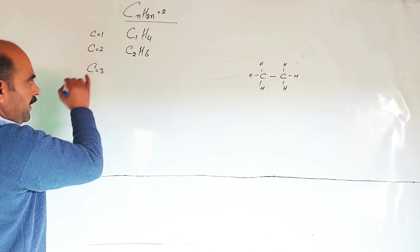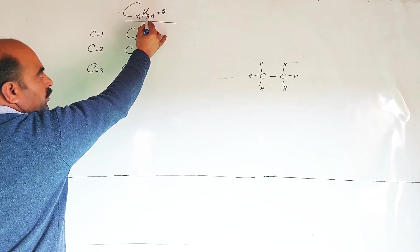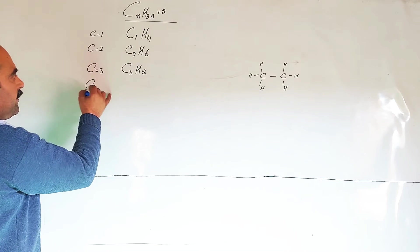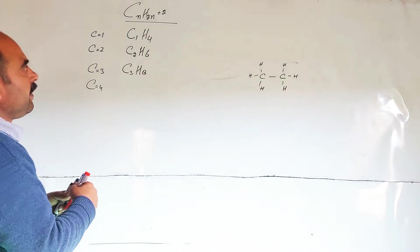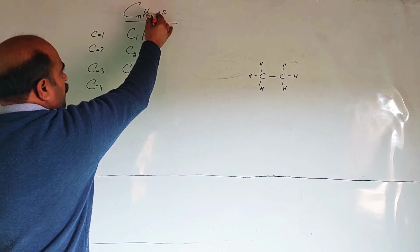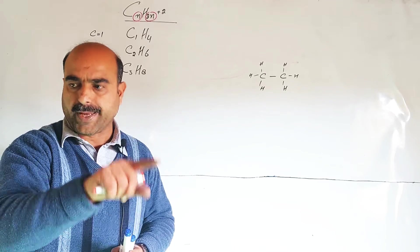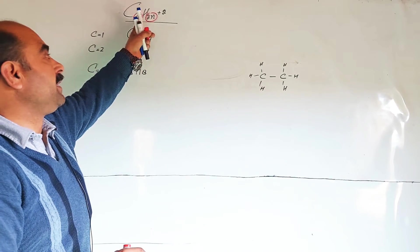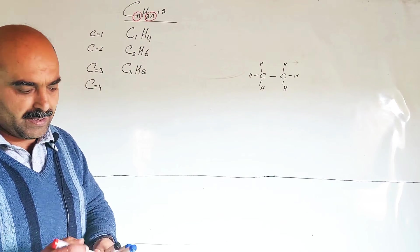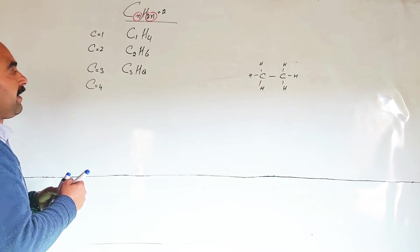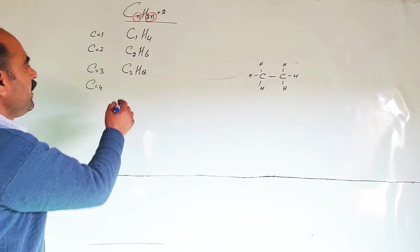When carbon equals 3: 3 multiplied by 2 is 6, plus 2 equals 8. This formula shows that hydrogen is always double the carbon count plus 2. So 2N gives the hydrogen contribution from carbon, and the total is 2N plus 2. For carbon 4: 4 doubled is 8, plus 2 gives 10.